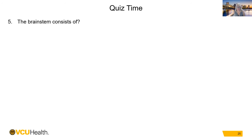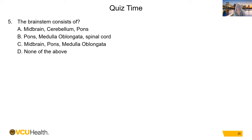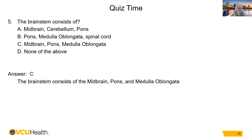Question 5 — The brainstem consists of: A) midbrain, cerebellum, and pons; B) pons, medulla oblongata, and spinal cord; C) midbrain, pons, and medulla oblongata; D) none of the above. The answer is C — the brainstem consists of the midbrain, pons, and medulla oblongata. This is important to know when looking for compression of the brainstem and coding injuries to these structures.